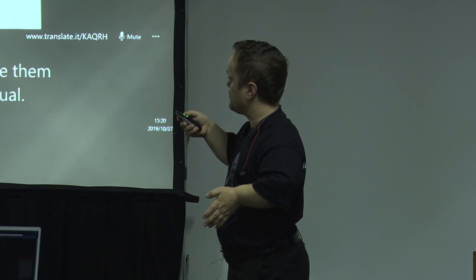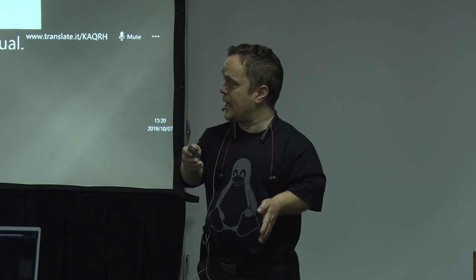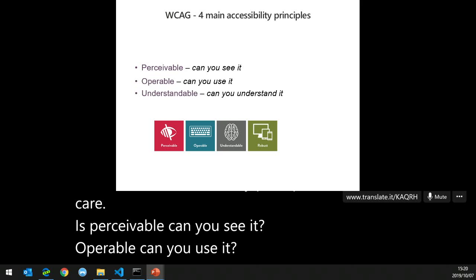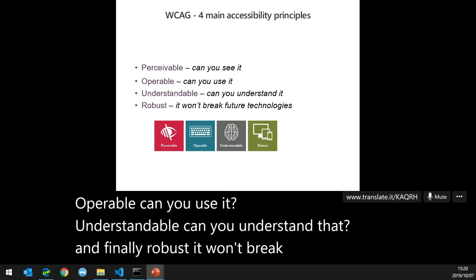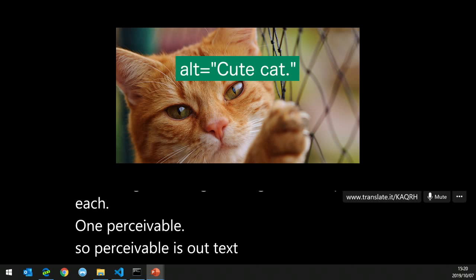There are four main accessibility principles in WCAG: Perceivable — can you see it? Operable — can you use it? Understandable — can you understand it? And Robust — it won't break future technologies. Let's go through an example for each one.